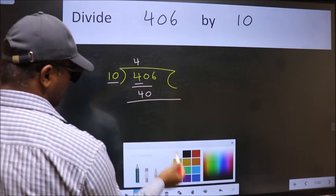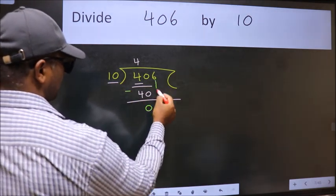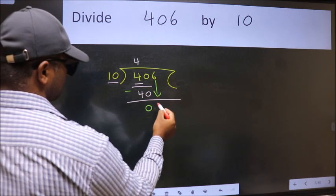Now we should subtract. We get 0. After this, bring down the beside number. So, 6 down.